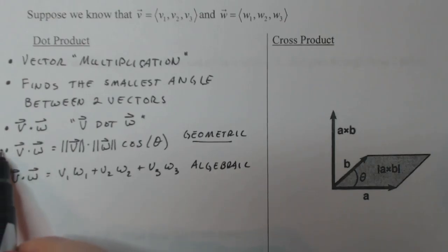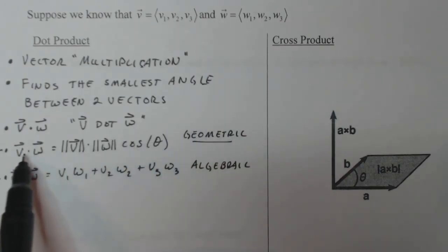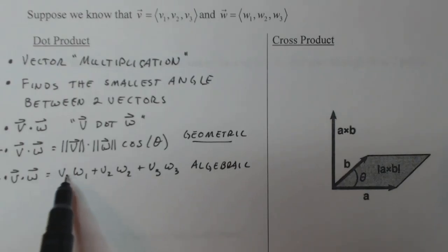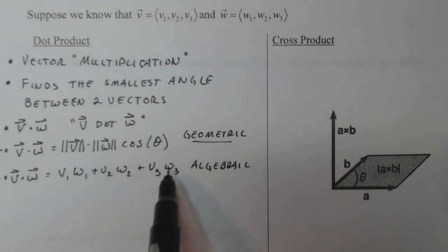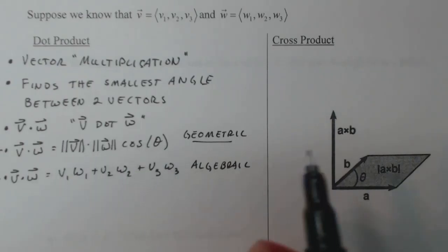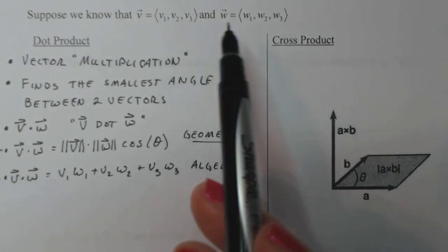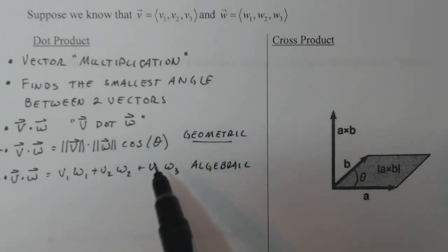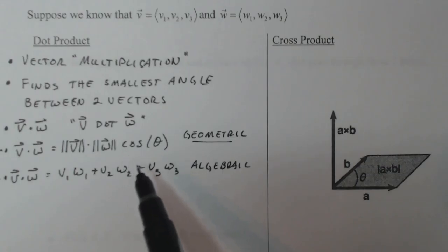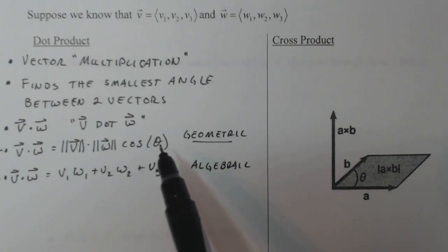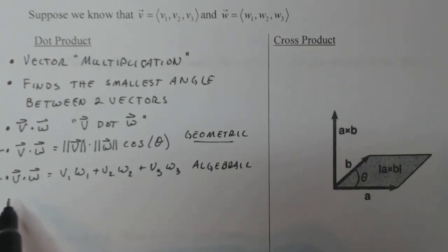These two formulas right here are equal. If this number equals V dot W and V dot W is also this number, that means that the two right hand sides are also equal. That's utilized to find the angle between two vectors. The only unknown will be the angle and then you solve for that. Don't forget that these two formulas here are equal, very important to remember.